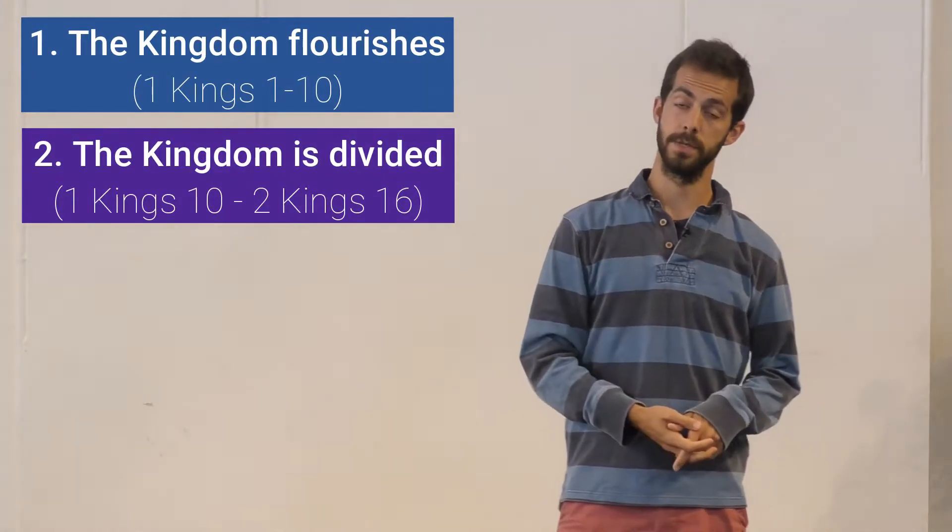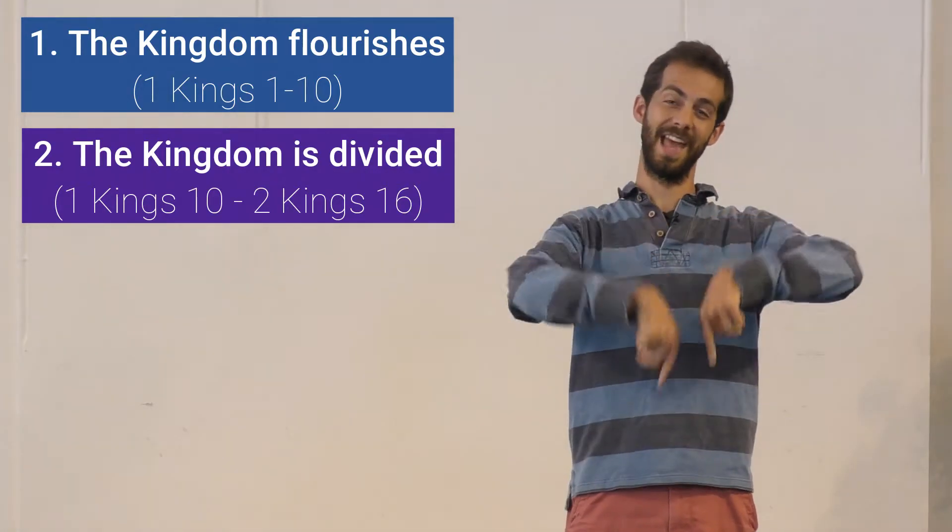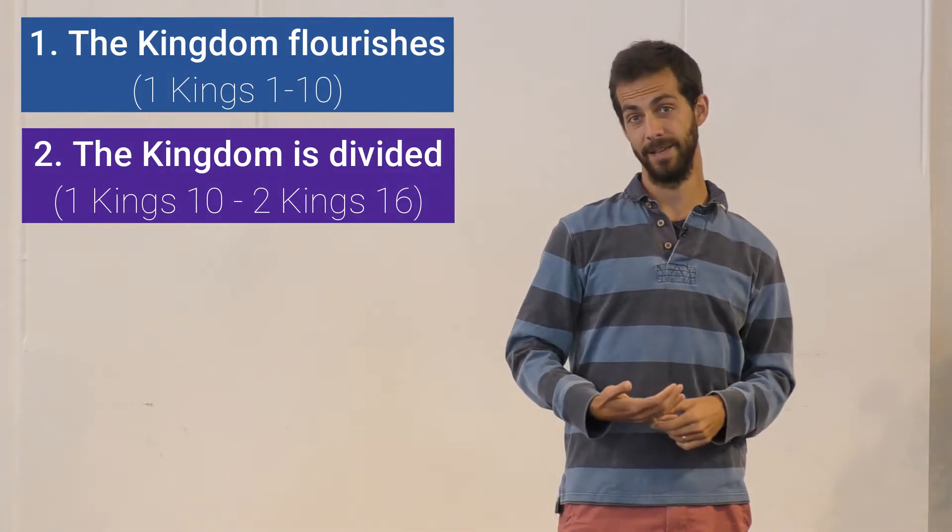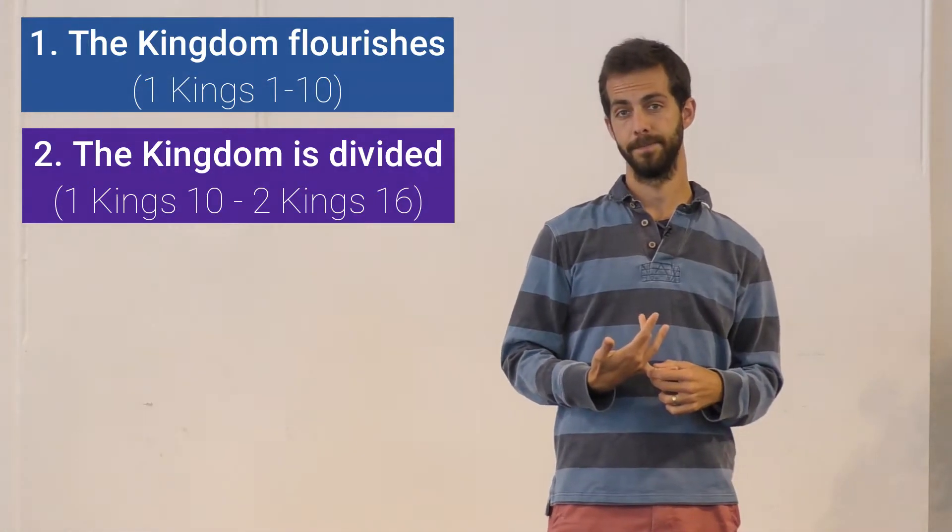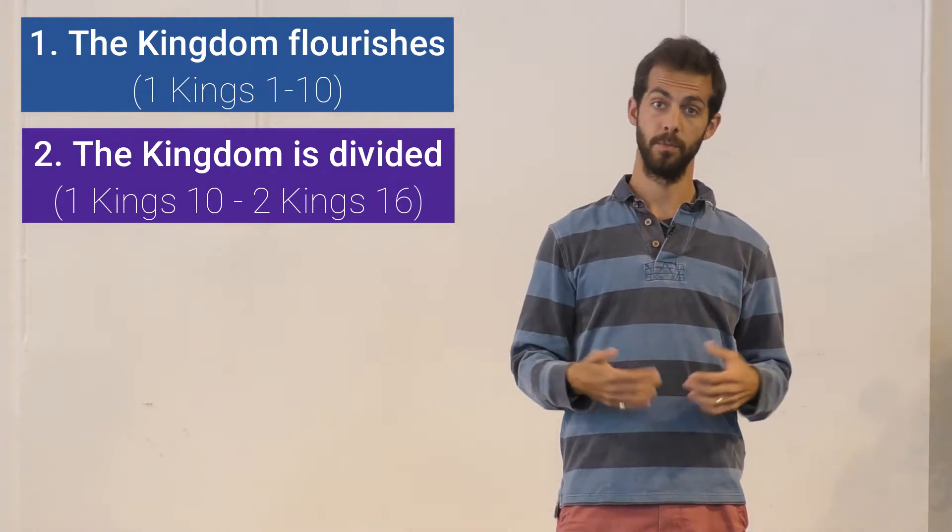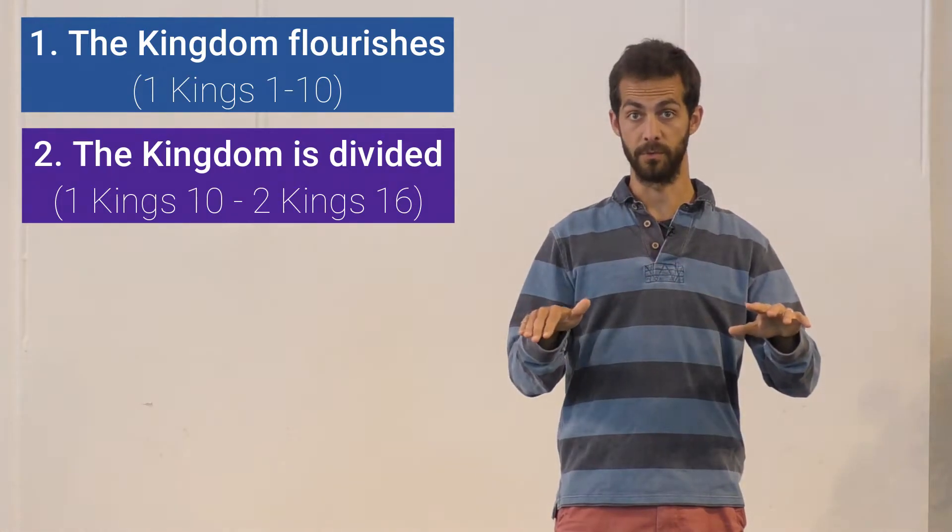And from this point on, the camera lens goes back and forward from north to south with over 400 years and 40 kings covered. Some rule longer than others. Some rule better than others. But none can stop the rot.